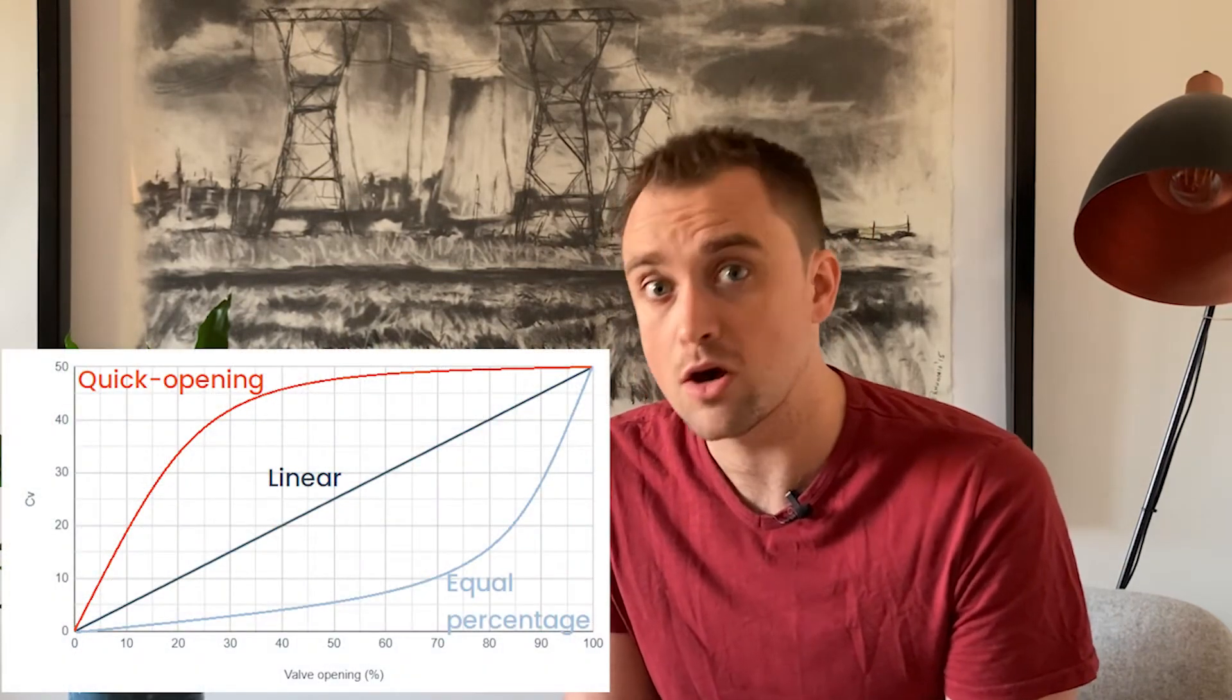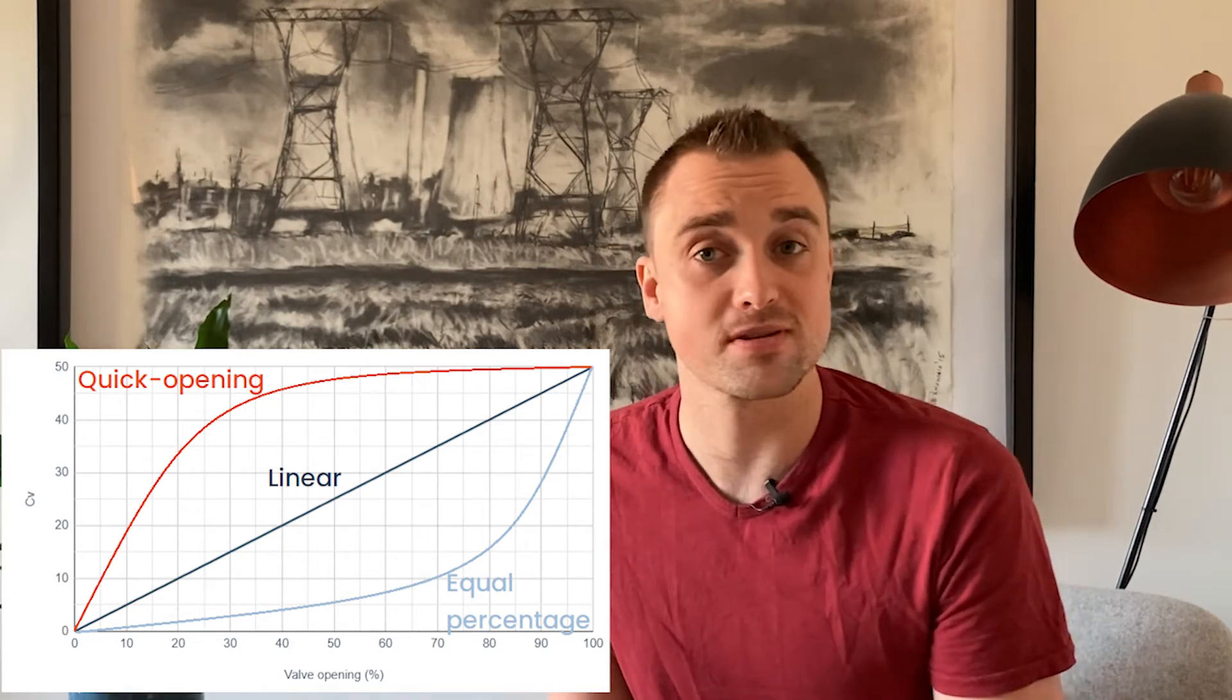But what usually gets explained is that control valves have a certain characteristic, meaning they can have something called a linear characteristic, an equal percentage characteristic, or a quick opening characteristic.